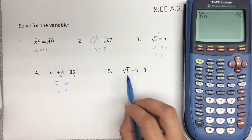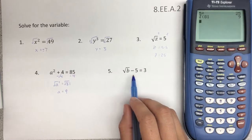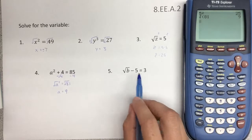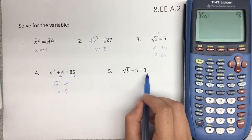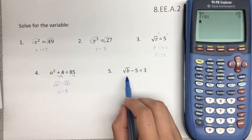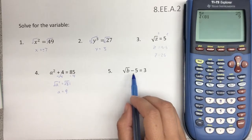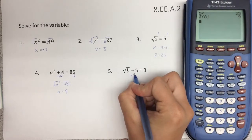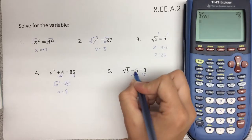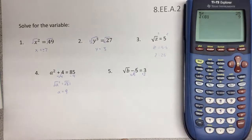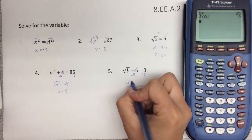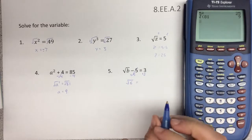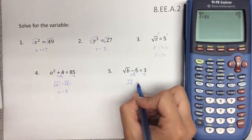And for number five, this is very similar. We have the square root of b minus 5 equals 3. We want this number to be with the other one on the other side. We need to get b isolated by itself on one side. So the opposite of subtracting is adding. So add 5 to both sides. Negative 5, positive 5 goes to 0. So you're left with the square root of b equals 3 plus 5 is 8.